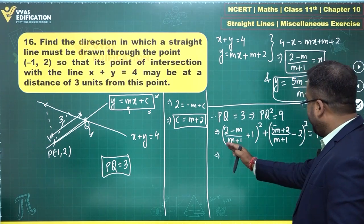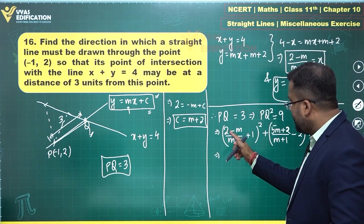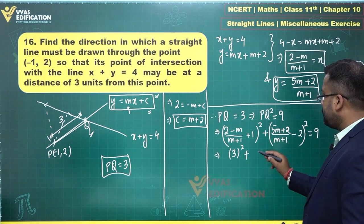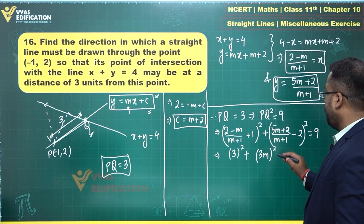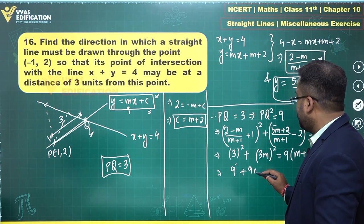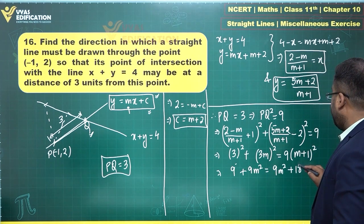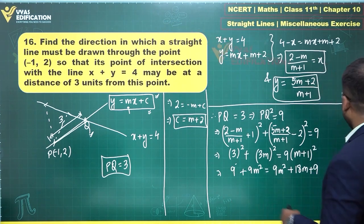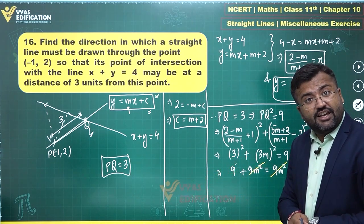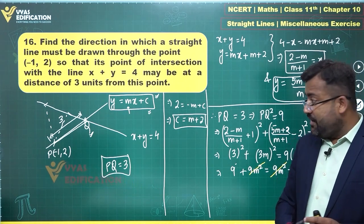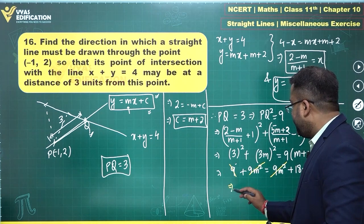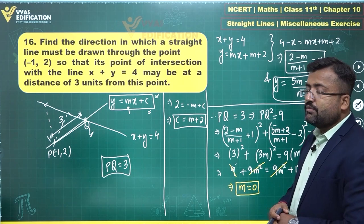Multiplying through by (m + 1)², the numerator for x₂ - x₁ simplifies to 3, so we get 9 + (5m + 2 - 2)² = 9(m + 1)², which becomes 9 + 9m² = 9m² + 18m + 9. A very peculiar thing happens: the 9m² terms cancel, and the 9s cancel too, leaving only 18m = 0, so m = 0 seems to be the only solution.